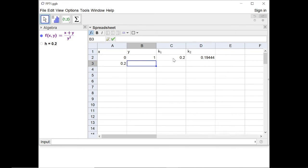And then my new value of y is my yₙ₊₁ is given by yₙ. So that was the value in B2 plus a half of k₁ plus k₂. So that's C2 plus D2 divided by 2, like that.